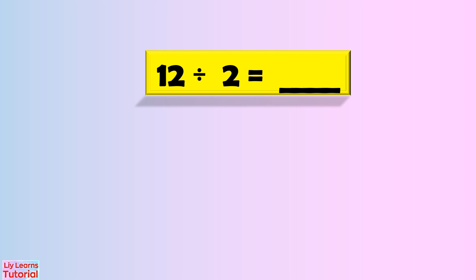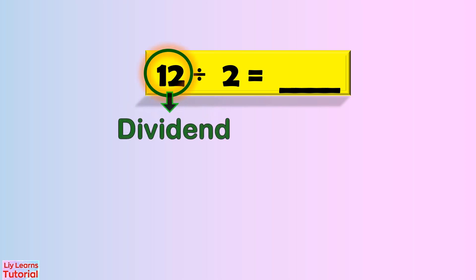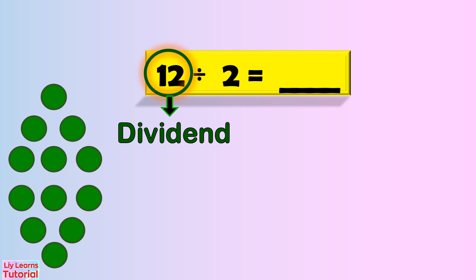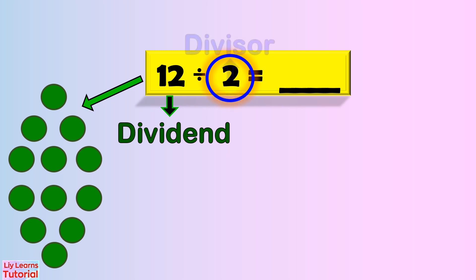Here's our first question: twelve divided by two. Twelve is the dividend, and that is the total number of objects.